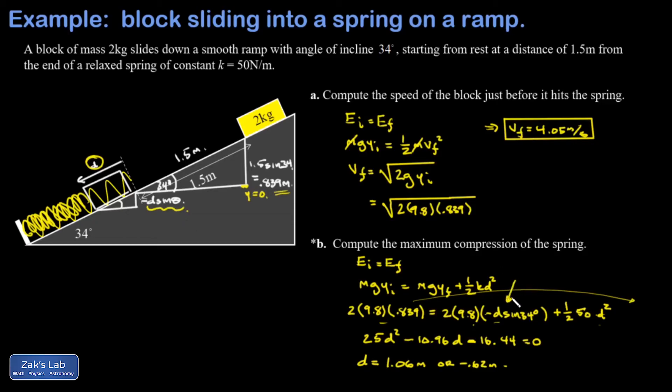And I see it here again where I know my final gravitational potential energy must be a negative number because I put the zero of height right here, and for that to be negative d must be positive. So as long as we're clear about the sign of d from the beginning I know which solution I need to choose and it's 1.06 meters of compression.